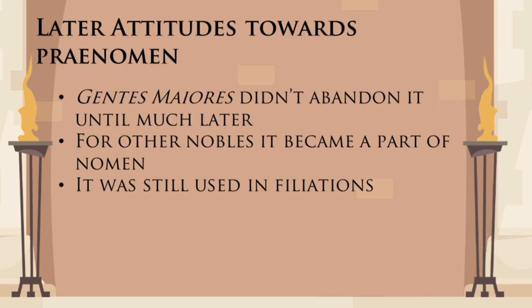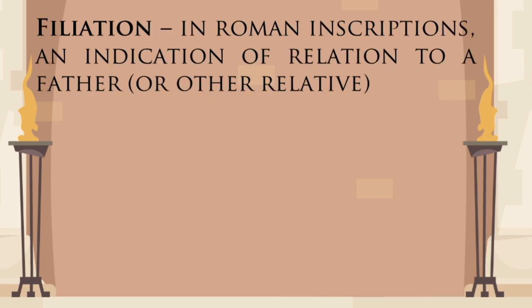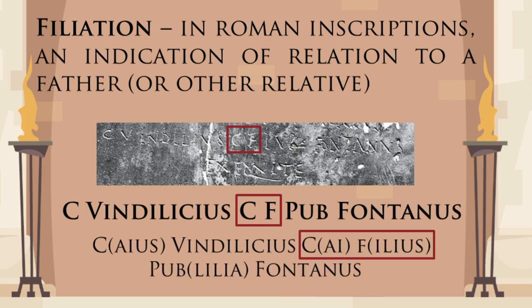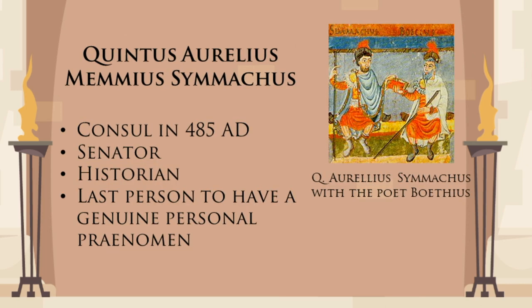Traditional praenomen also survived in filiations. The Romans often put the names of their father and other relatives into their full name — this 'CF' in the middle means Gai Filius, 'son of Gaius.' Even though it is unlikely that anyone addressed this officer's father as Gaius, he is still referred to as such on his son's diploma. The last recorded man to have a genuinely personal praenomen is one Quintus Aurelius Memmius Symmachus, consul in 485 AD.